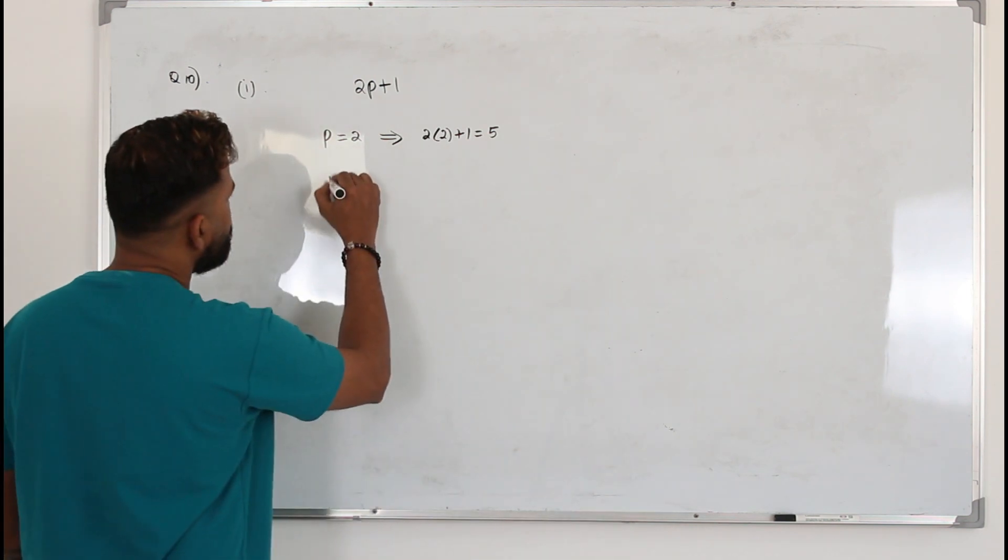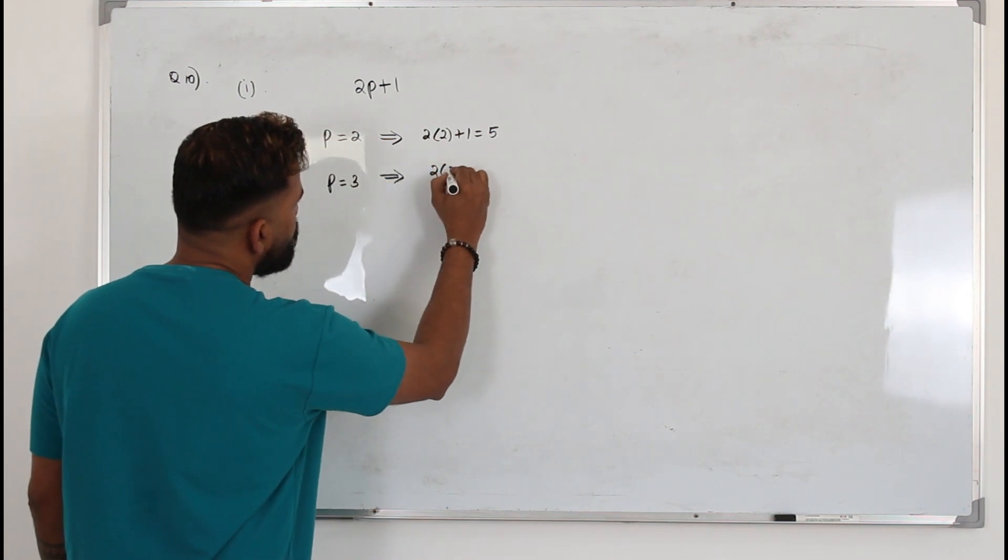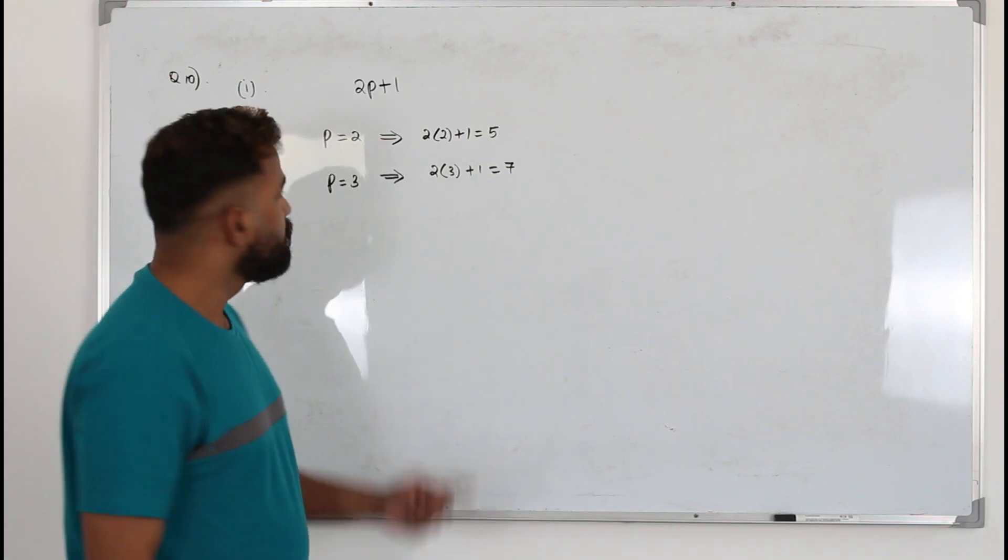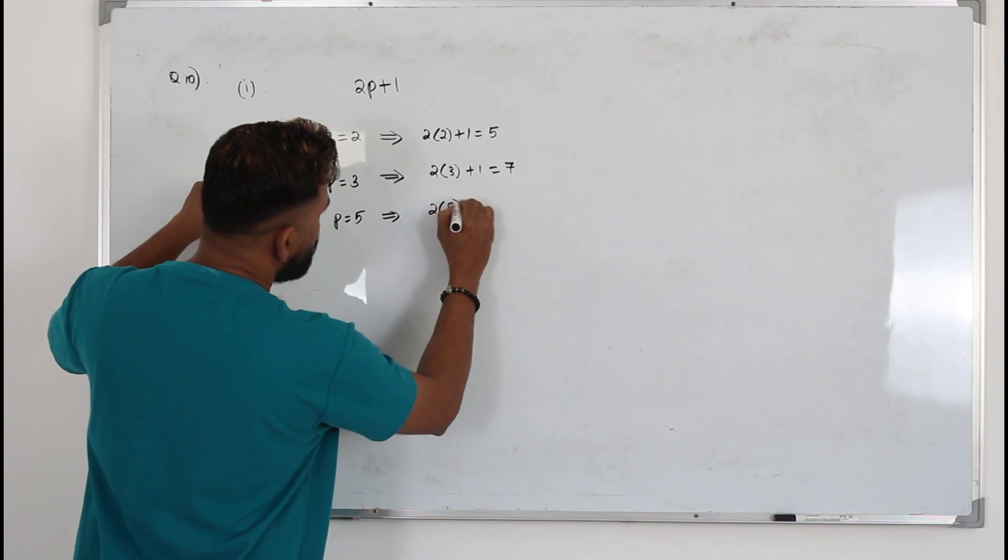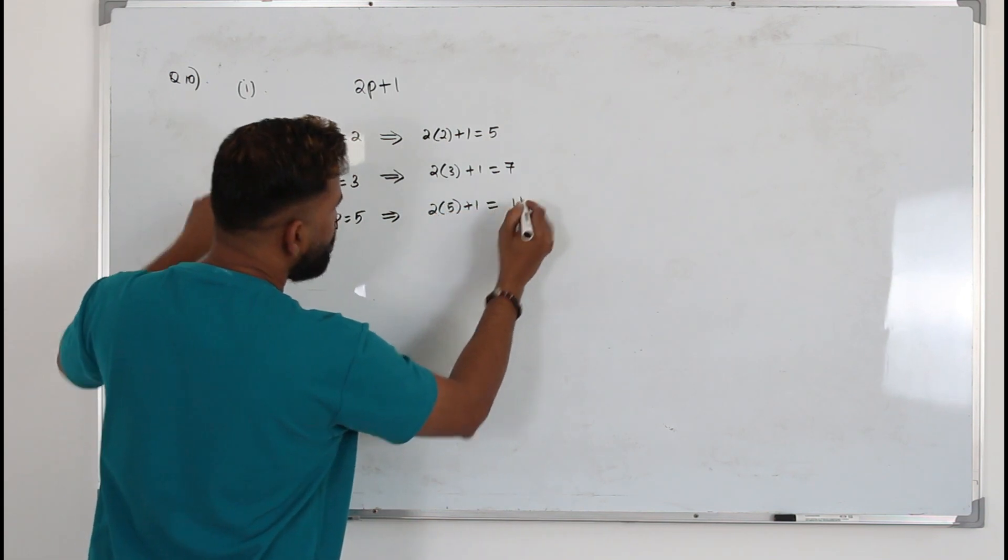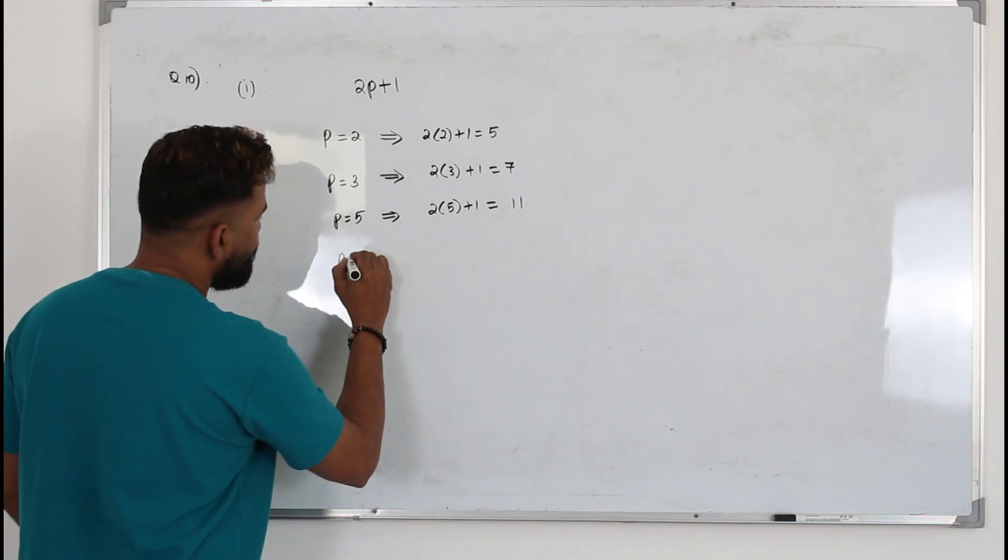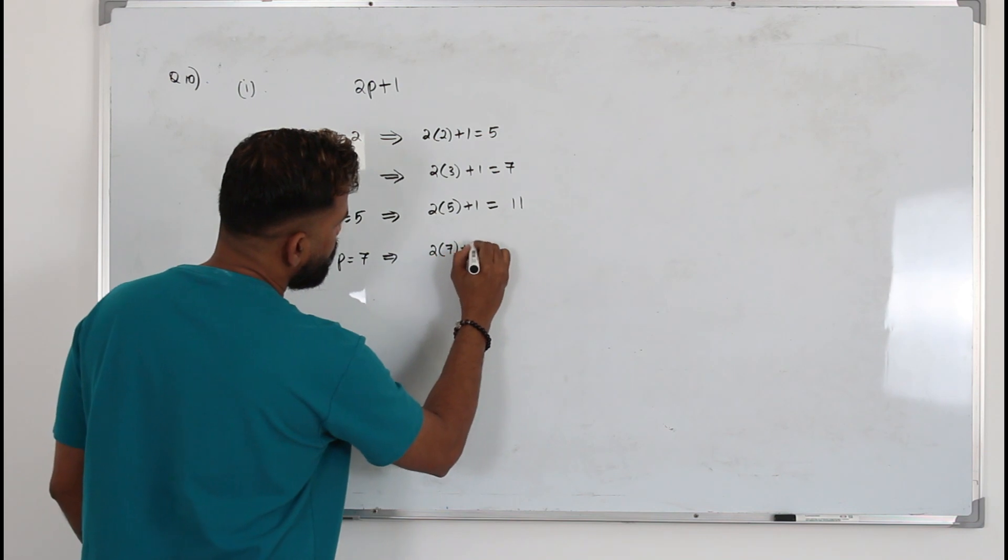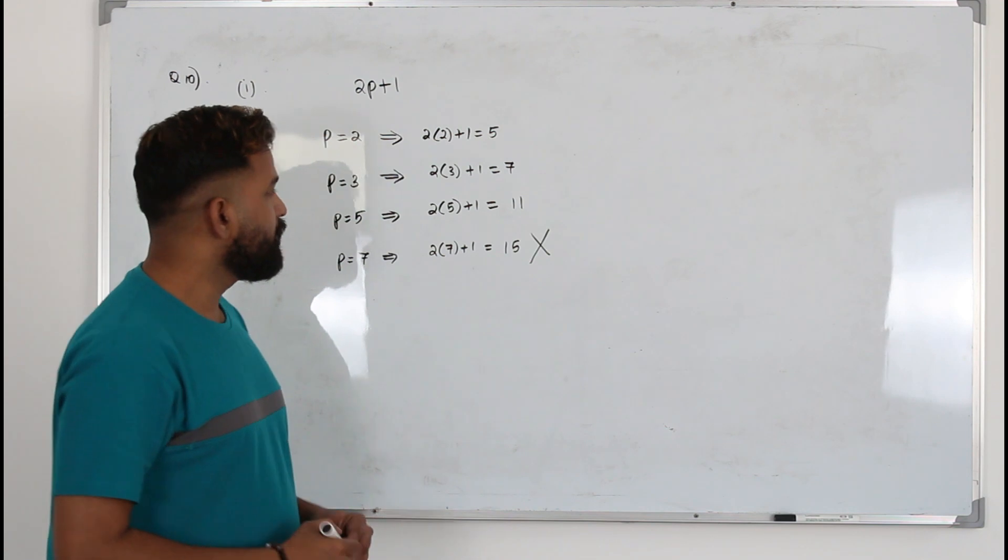Let's try with some other prime, maybe 3. When you try 3, 2 times 3 plus 1 is 7, again a prime number. Try with the next prime, 5. You get 2 times 5 plus 1 equals 11. 11 is also a prime. How about we take the next one? 2 times 7 plus 1 equals 15, which is not a prime.